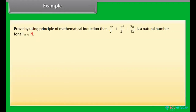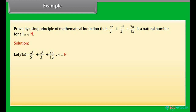Example. Prove by using the principle of mathematical induction that n⁵/5 + n³/3 + 7n/15 is a natural number for all n belonging to N. Solution: let f(n) = n⁵/5 + n³/3 + 7n/15.